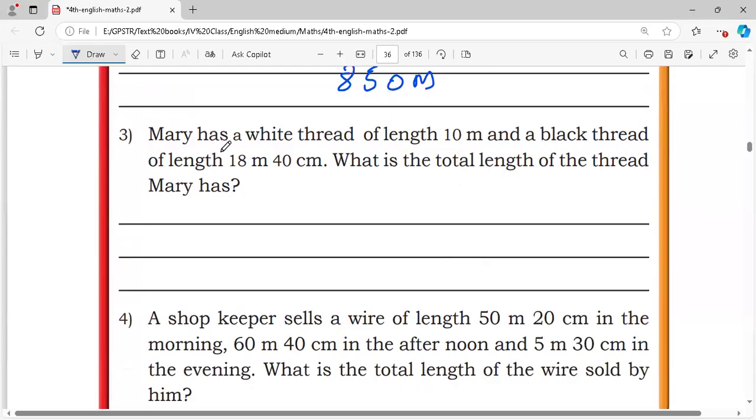Third one. Mary has a white thread of length 10 meter and black thread of length 18 meter 40 centimeter. What is the total length of thread Mary has? Add all these: 10 meter 0 centimeter, 18 meter 40 centimeter. 0 plus 4 is 4, 0 plus 8 is 8, 1 plus 1 is 2, equals 28 meter 40 centimeter.